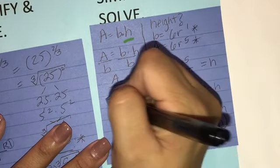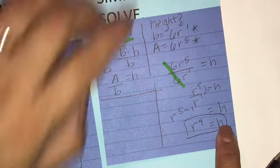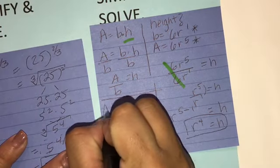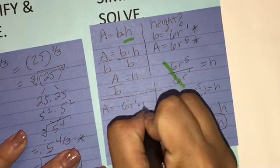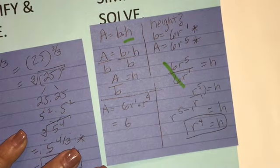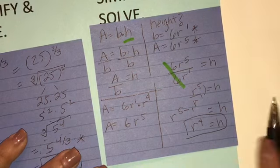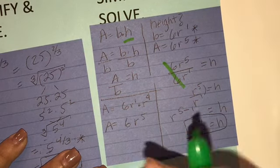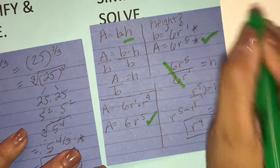Now if I check my answer, height times base, area equals 6 r to the 1st times r to the 4th is going to give me 6 r to the 5th. So then my area matches each other.